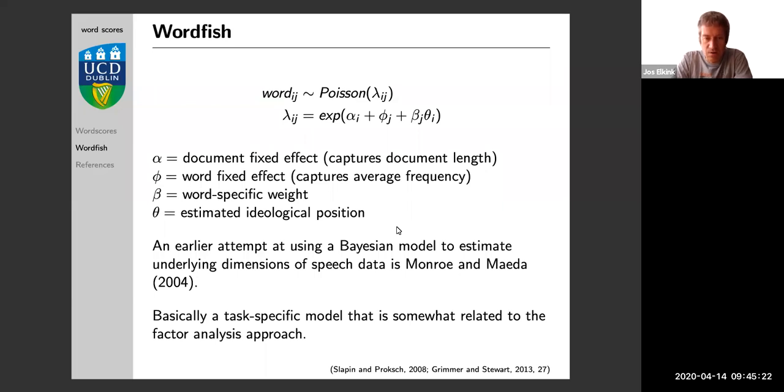So this is a Bayesian model that tries to estimate—there is an earlier version in 2004 and otherwise it's based on this idea of Wordscores as well. But it is basically a statistical method to estimate the position of a set of documents on an underlying ideological dimension.